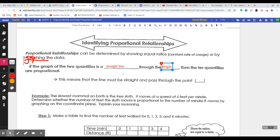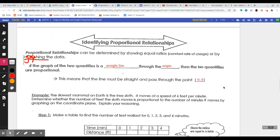So this means that the line must be straight and pass through the point. Do you know what the origin is? It is the point zero comma zero.